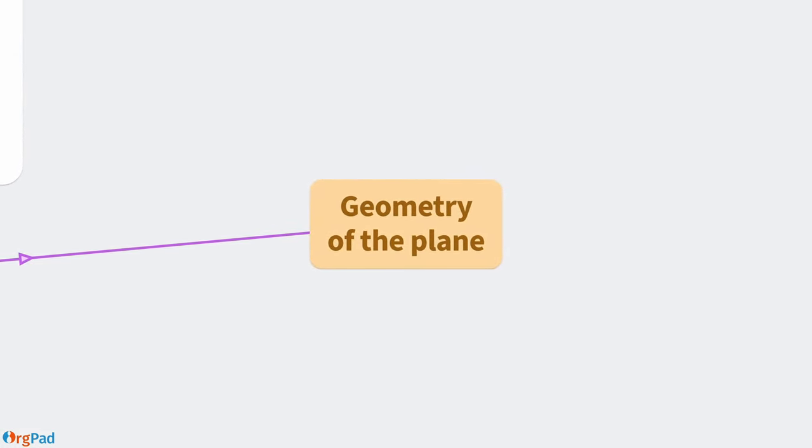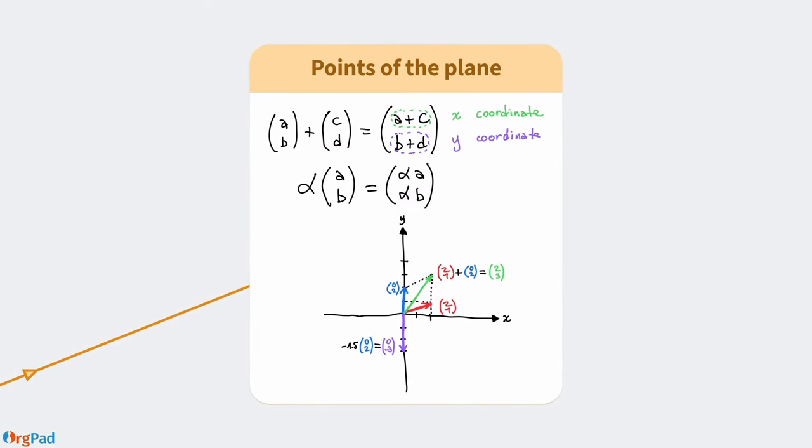Let's sidestep the complex numbers for a second and talk about plane geometry. If you are familiar with vectors, matrices and their geometric meaning, feel free to skip to the next chapter. All points of the plane, also called vectors, can be described as pairs of numbers representing the coordinates on the x and y axis. Vectors can be added by summing their coordinates, corresponding to adding forces in physics. And vectors can be scaled by an arbitrary number alpha, making the resulting vector longer or shorter. If alpha is negative, the direction of the vector is flipped.